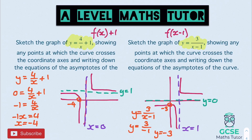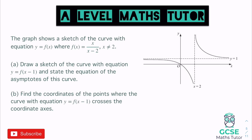Now for exam-style questions. The graph shows a sketch of y = f(x), where f(x) = x/(x − 2) and x ≠ 2. That x ≠ 2 condition tells us one asymptote: x = 2. We can also tell from the diagram that y = 1 is the other asymptote. Part (a) asks to draw a sketch of y = f(x − 1) and state the equations of the asymptotes. Part (b) asks for coordinates where the curve crosses the axes.